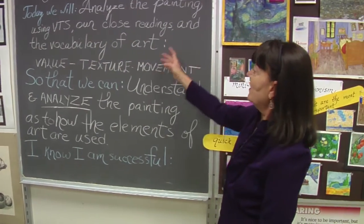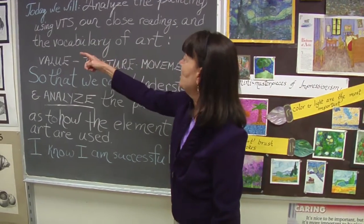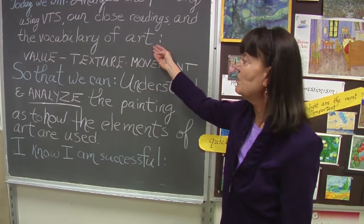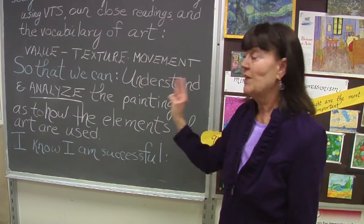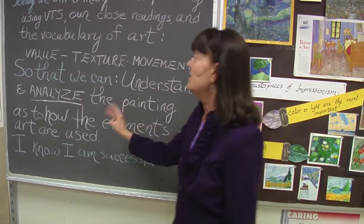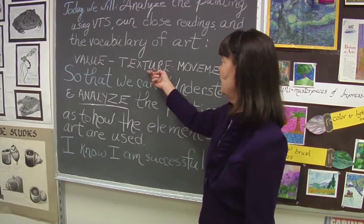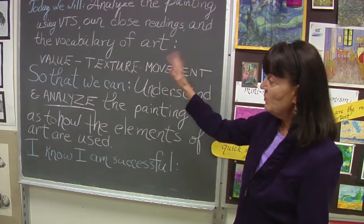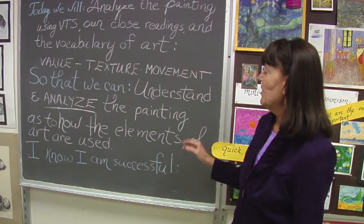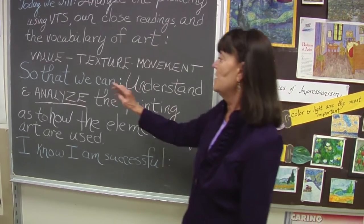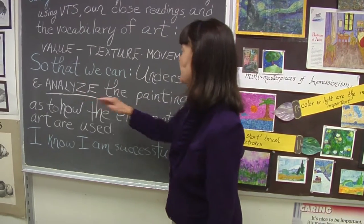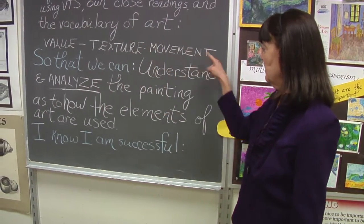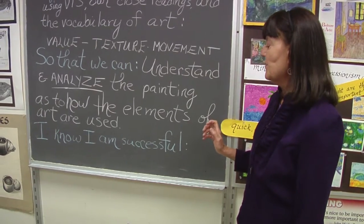Our close readings and the vocabulary of art — this is called our academic vocabulary. Today's vocabulary is value, texture, and movement. Why are we doing this? So that we can understand and analyze the painting as to how the elements of art are used.